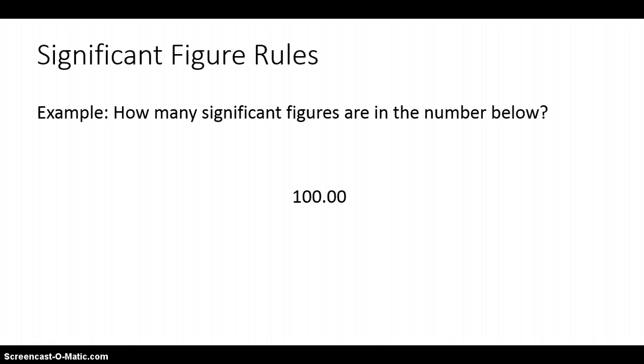How about this next number — how many significant figures does it have? In this case there are five significant figures, justified by rule number three and rule number four. Rule three says the zeros at the end to the right of the decimal point are significant. Rule four says zeros to the left of the written decimal point in a number larger than ten are also significant. Therefore, there are five significant figures in this number.